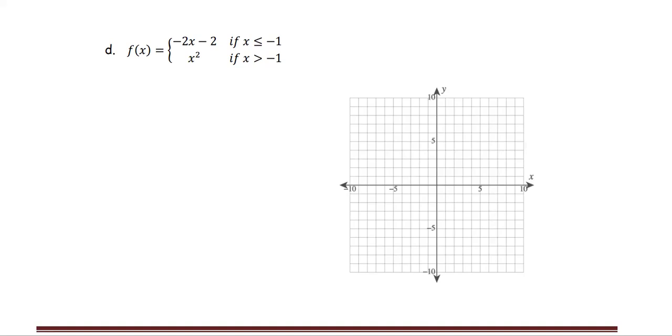We're going to look at each function for each x defined. If x is less than or equal to negative 1, f of x equals negative 2x minus 2. If x is greater than negative 1, the function f of x is defined to be x squared.